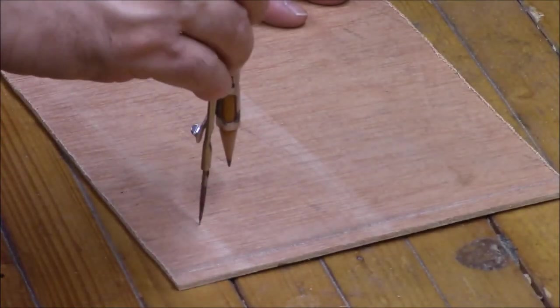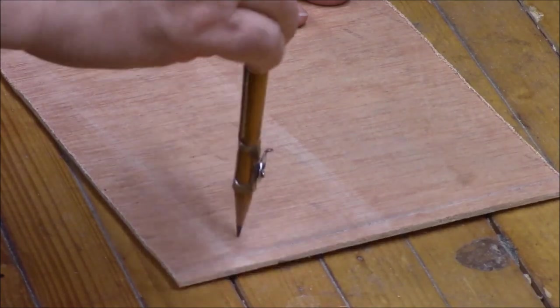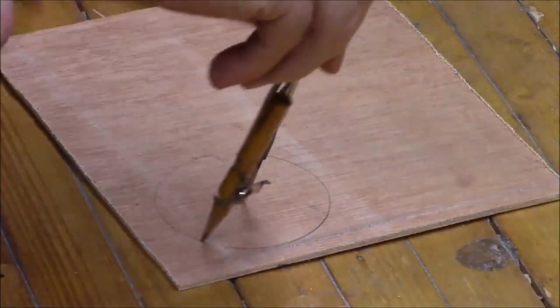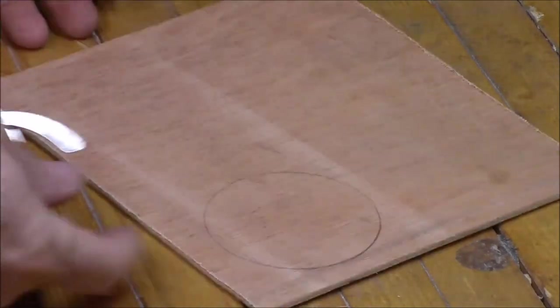And I'm using 1 eighth inch Luan for this, by the way. Now that we've got our circles drawn, we need to cut them out.